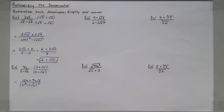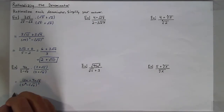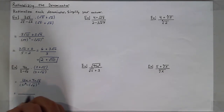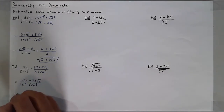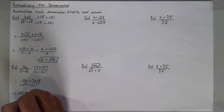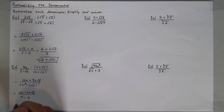My denominator is now 9 minus 6, and my numerator is 12x plus 4x times the square root of 6, leaving my denominator as just 3.